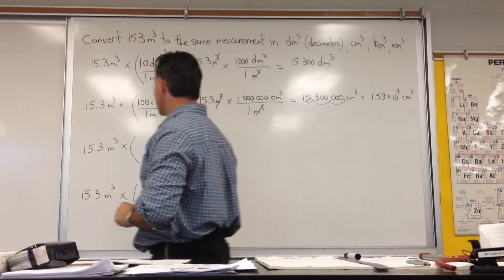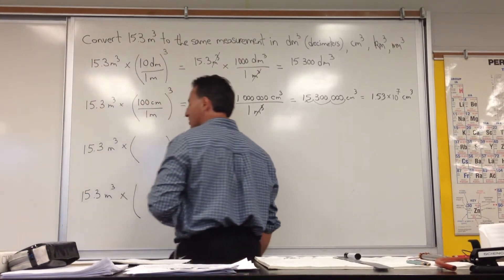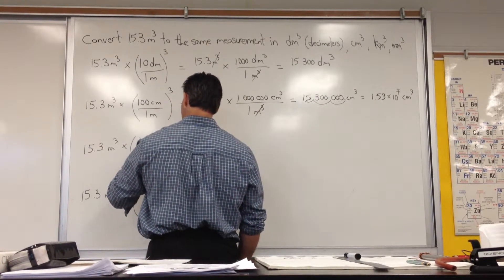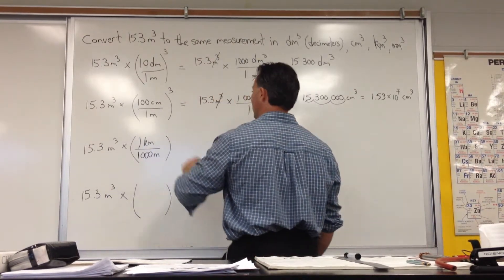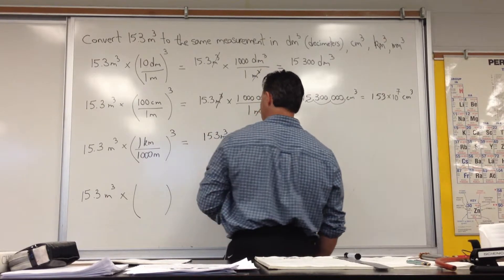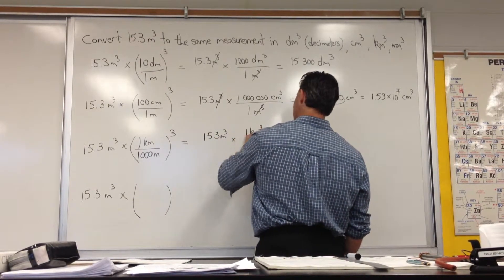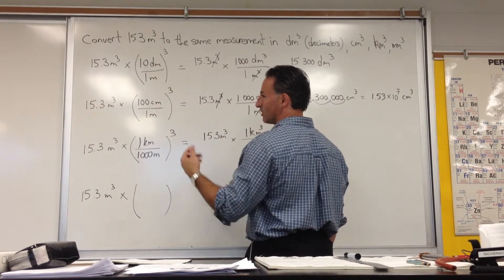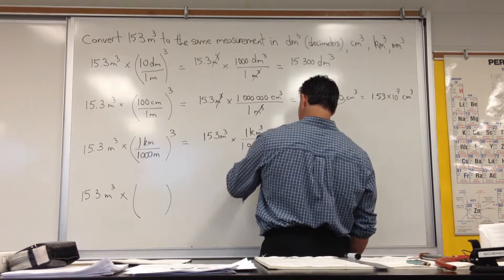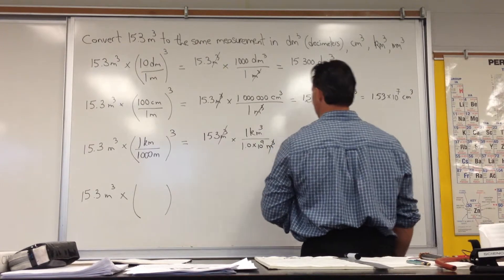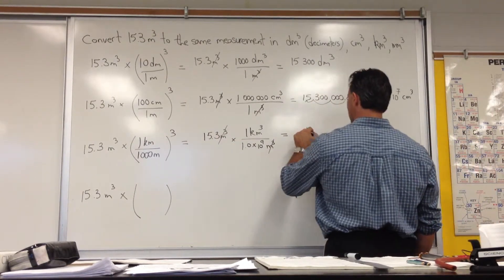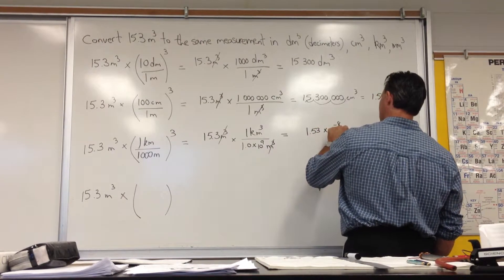In the third example, we're converting to kilometers cubed. There are 1,000 meters per kilometer, so we're going to put kilometers in the numerator since meters is what we're trying to cancel. Again, we have to cube the conversion factor. The result is 15.3 meters cubed times 1 kilometer cubed per 1,000 cubed. 1,000 times 1,000 times 1,000 is 1 billion — 1.0 times 10 to the 9. So we get 15.3 divided by 1,000,000,000, giving us 1.53 times 10 to the minus 8 kilometers cubed.